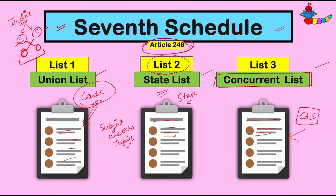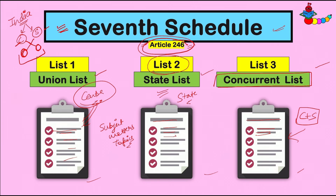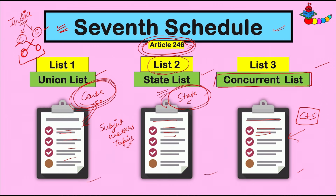Sum up करूं तो — 7th Schedule तीन lists के बारे में बात करता है: List 1 यानी Union List, List 2 यानी State List, और List 3 यानी Concurrent List। और Article 246 बोलता है कि Union List पे power रहेगी Center के पास, State List पे power रहेगी State के पास, और Concurrent List में ये मिलकर law बनाएंगे।